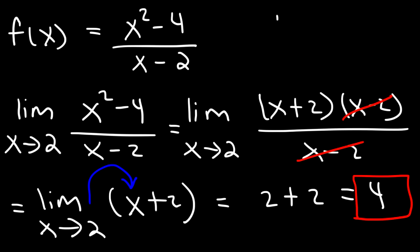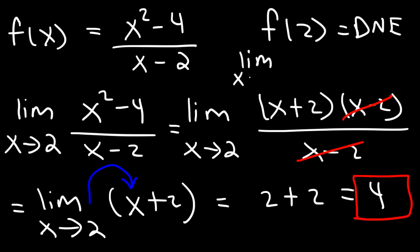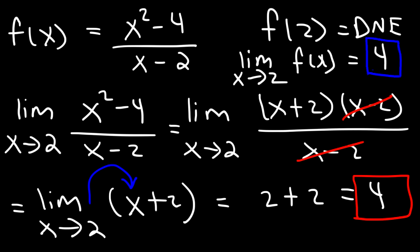Even though f(2) does not exist, the limit as x approaches 2 of f(x) exists and equals 4. Limits help you see what happens to a function as x approaches a certain value.